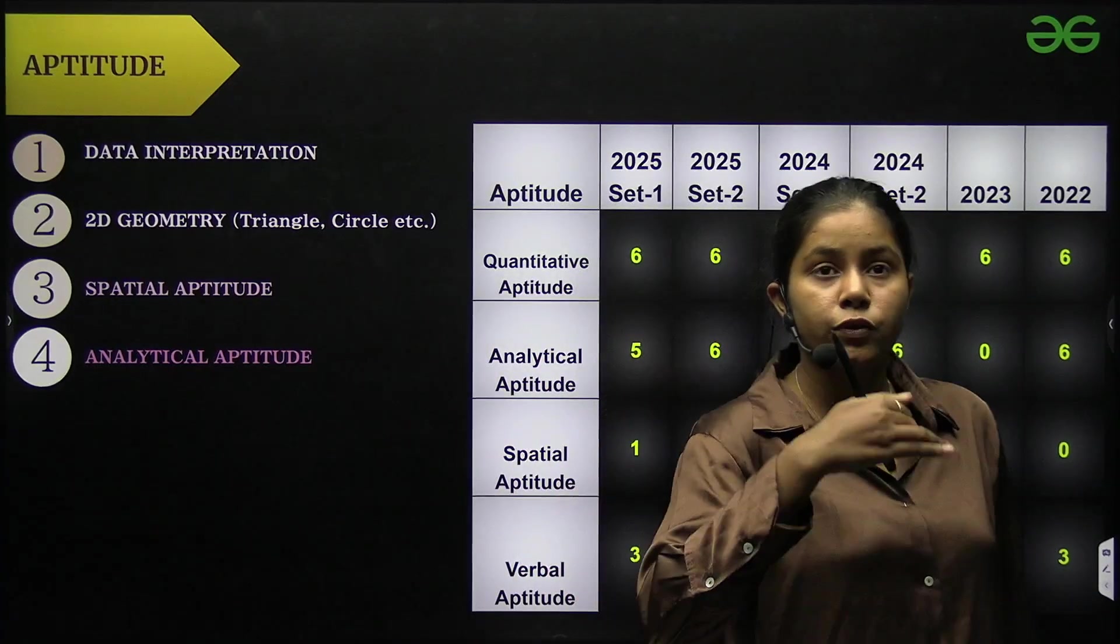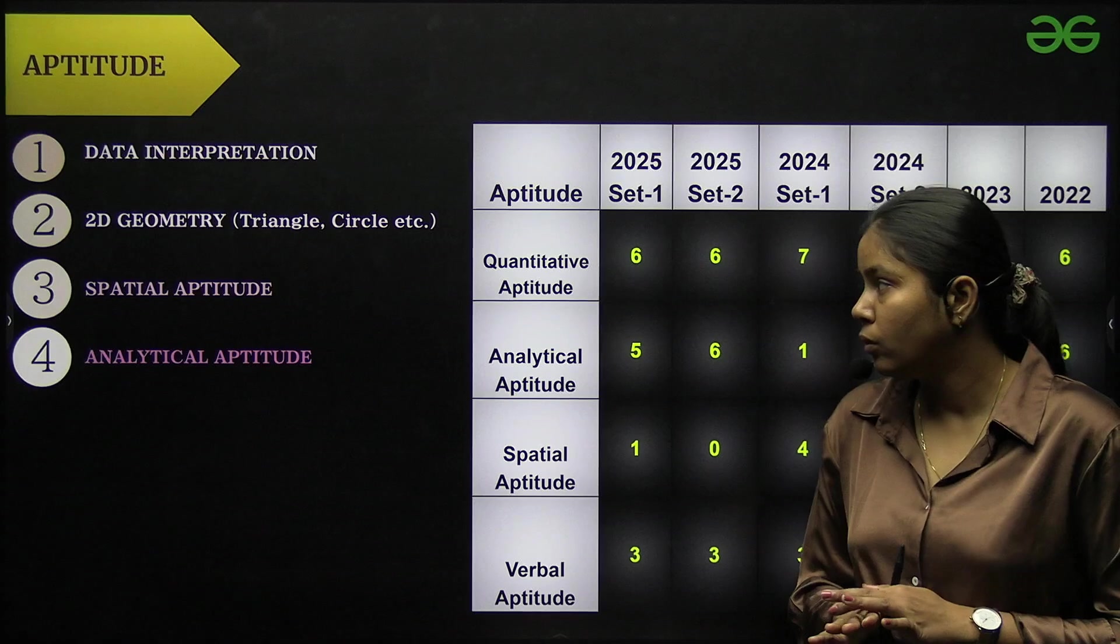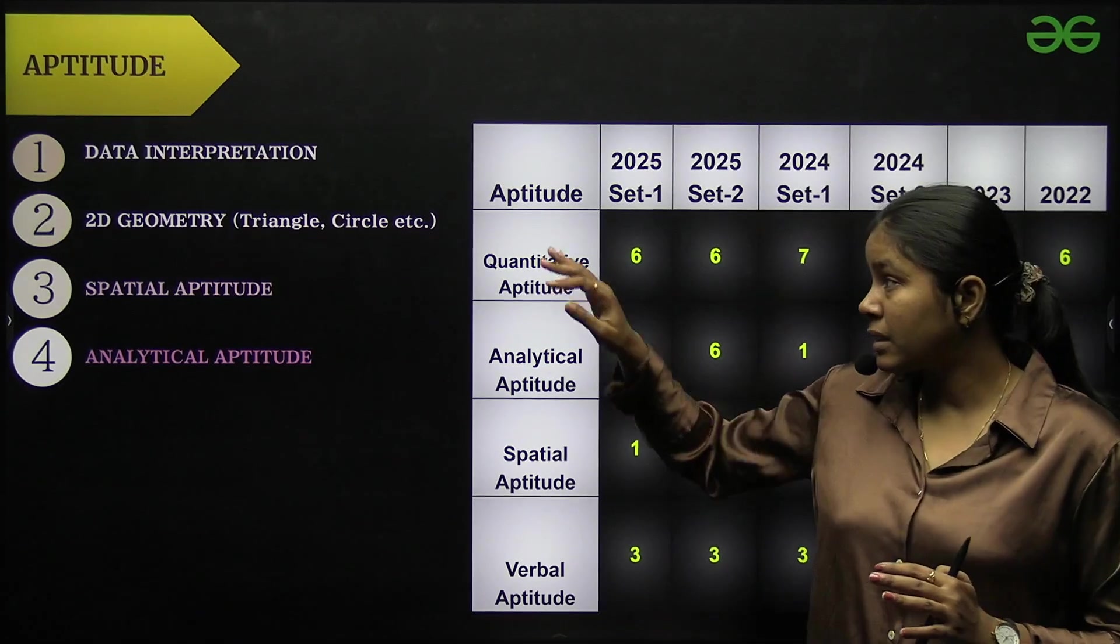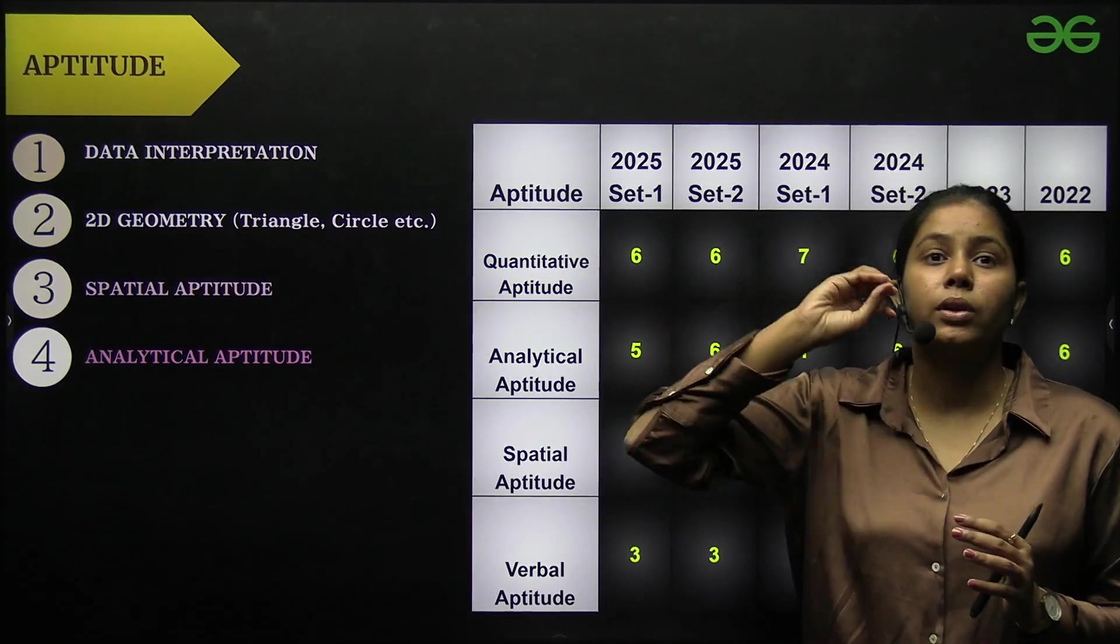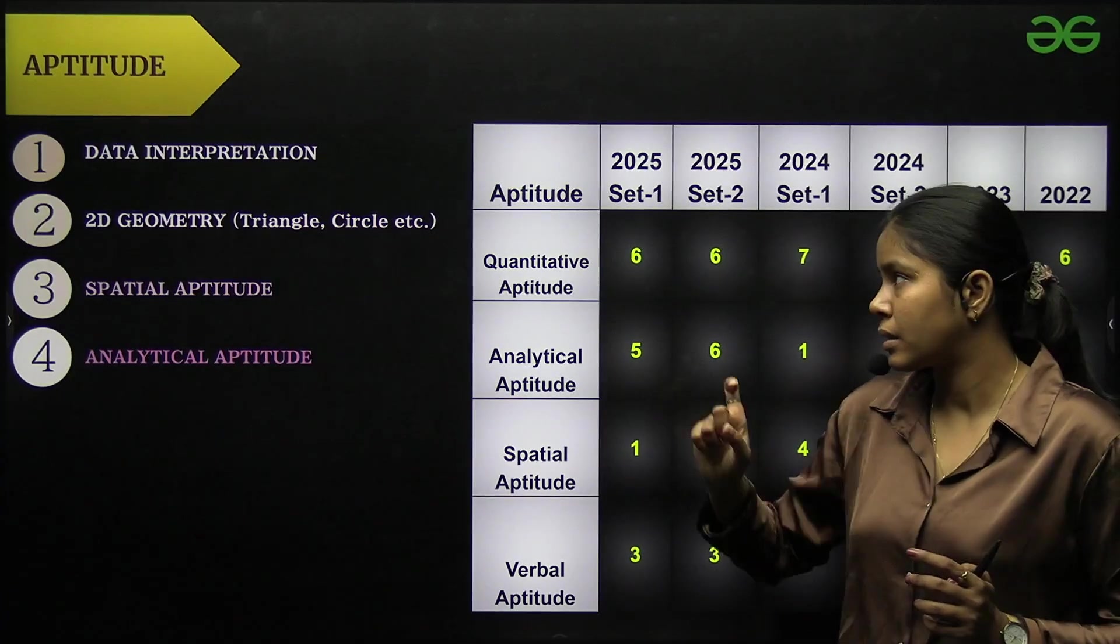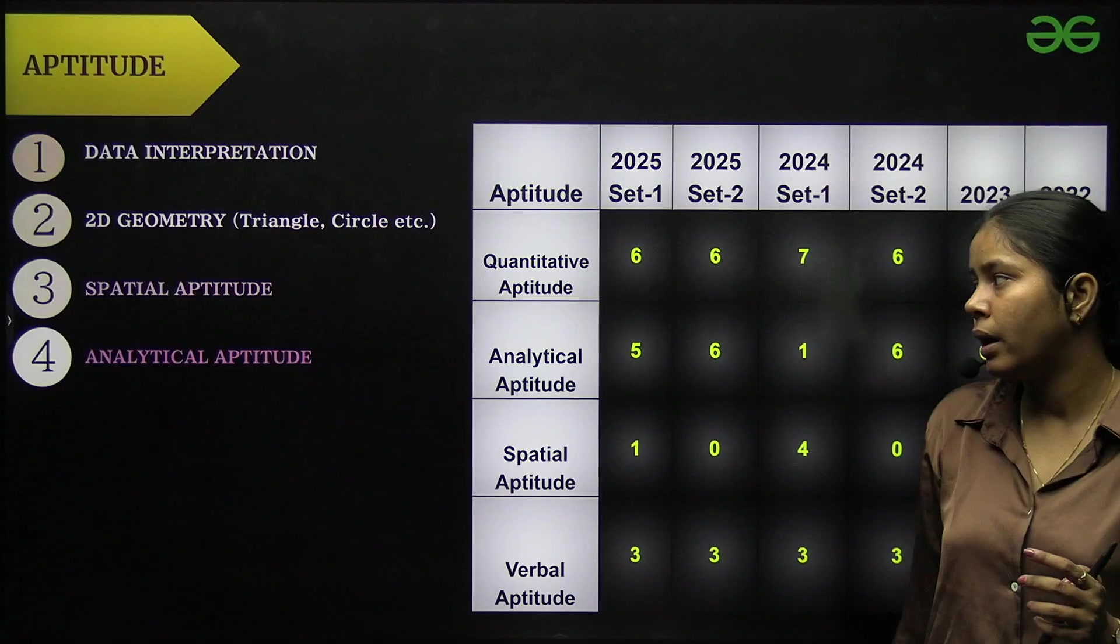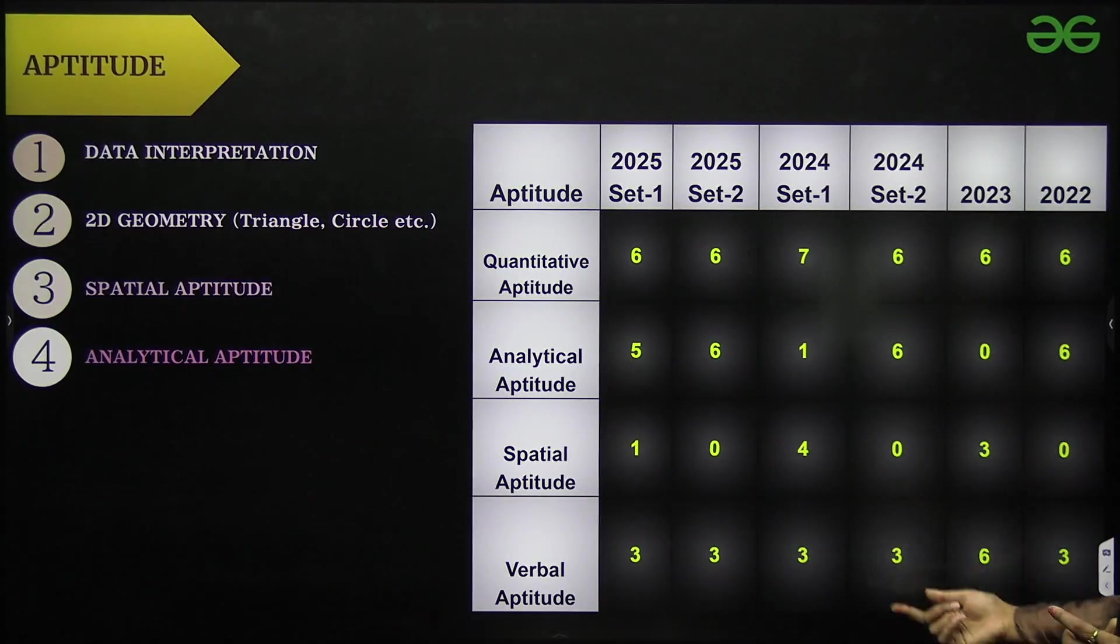So aptitude is one of the important subjects which we left, thinking that we'll be able to do it. But you have to focus on aptitude because it consists of 15 marks and you have to score those 15 marks. Data interpretation, 2D geometry, spatial aptitude and analytical aptitude. And you can see what they have asked in past years, the pattern you can know from here.